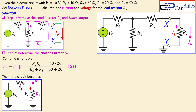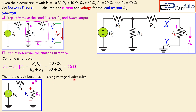Knowing VP means we also know the voltage across R2 and R3, and from that we can find the current through R3 using Ohm's law. Using the voltage divider rule: VP = (RP / (R1 + RP)) × Vs.